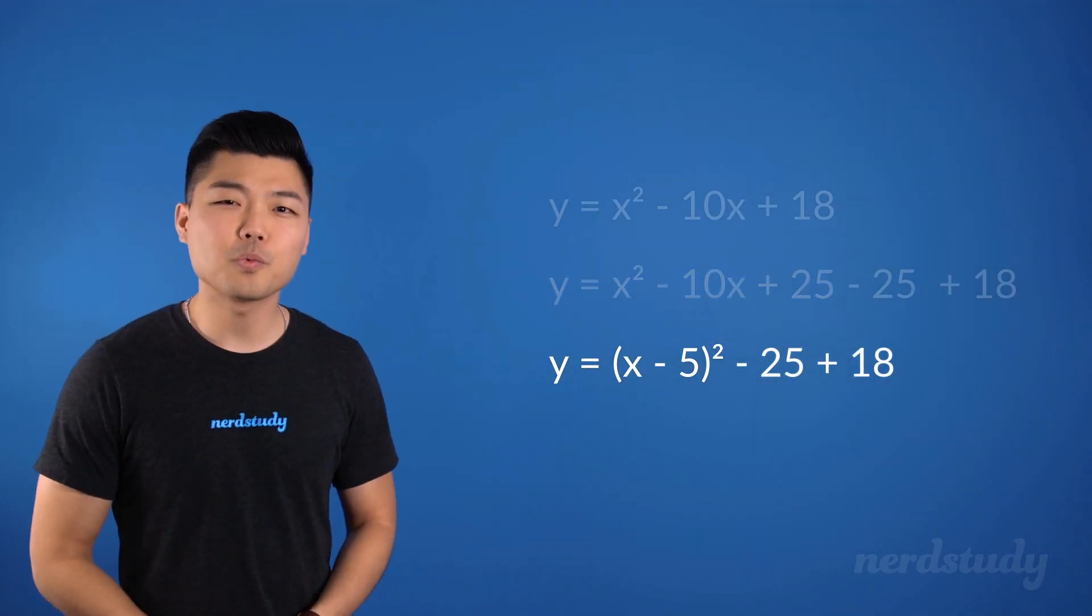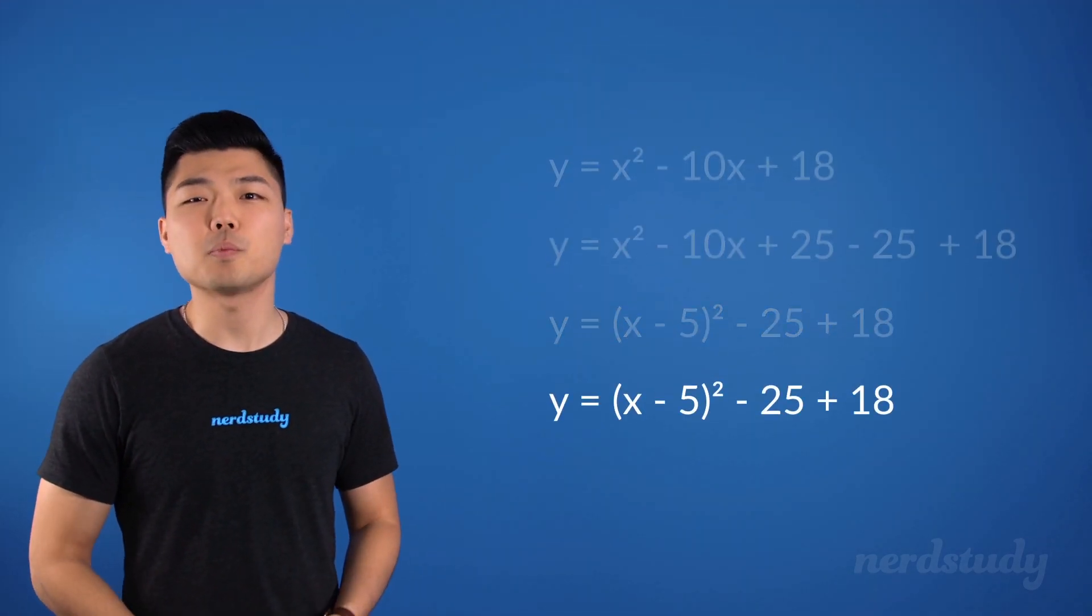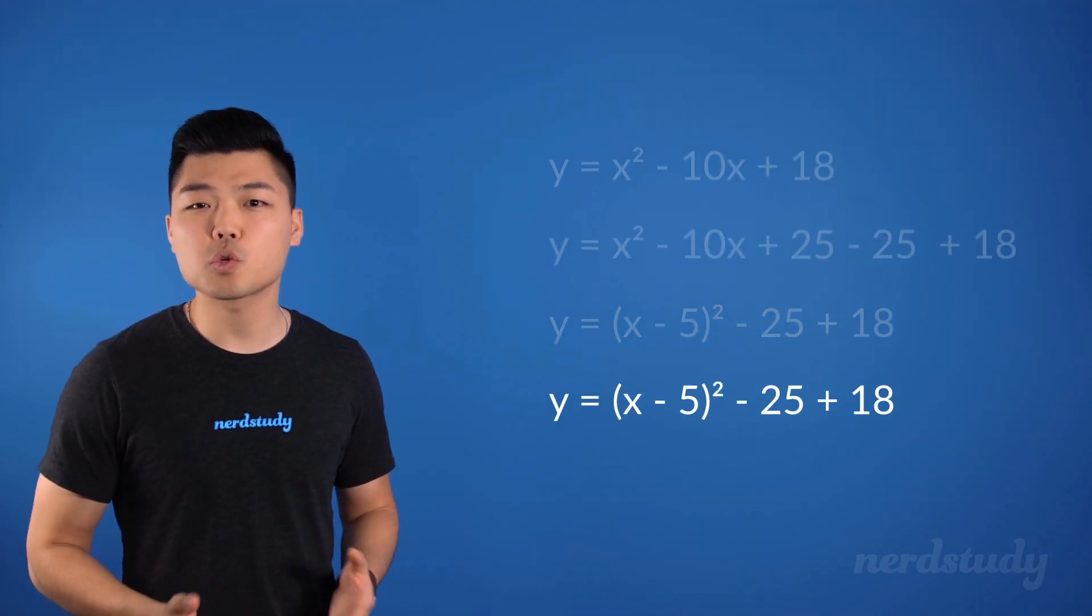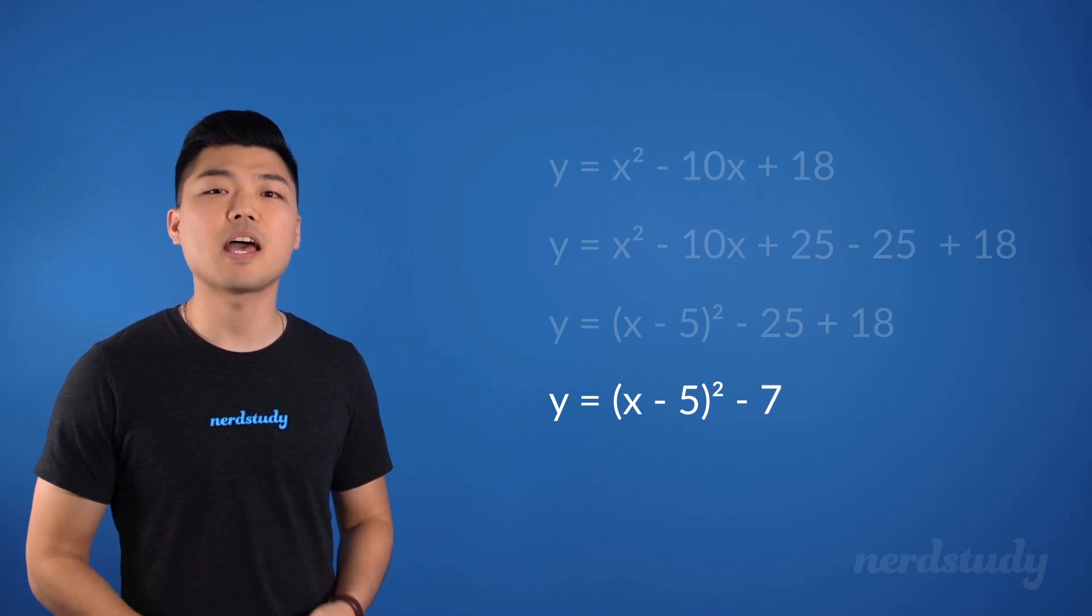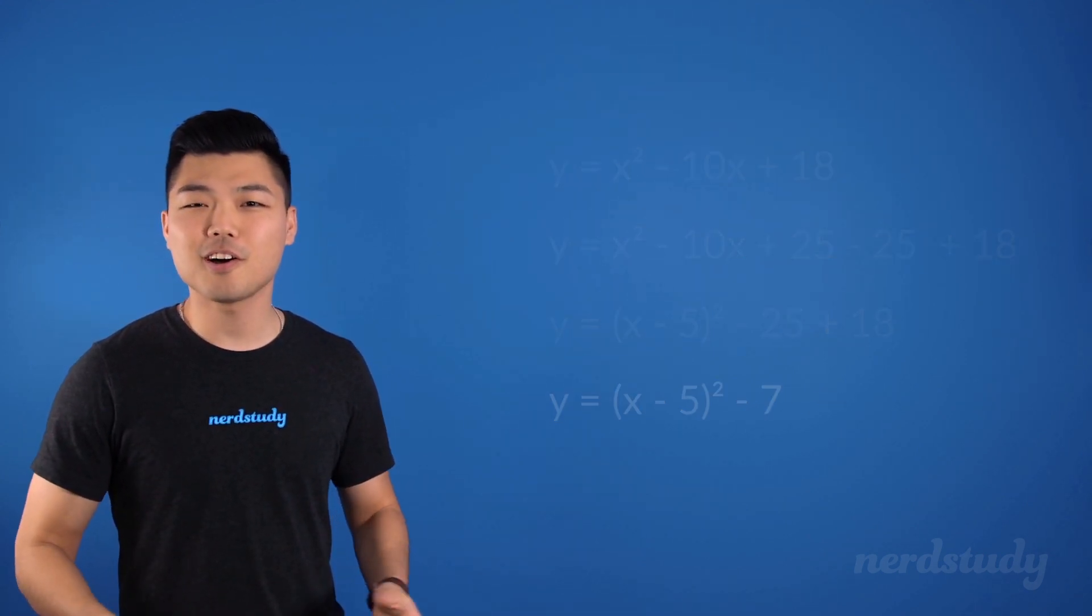So we just need to simplify this and we'd get (x - 5)² - 7 as our final vertex form. Awesome.